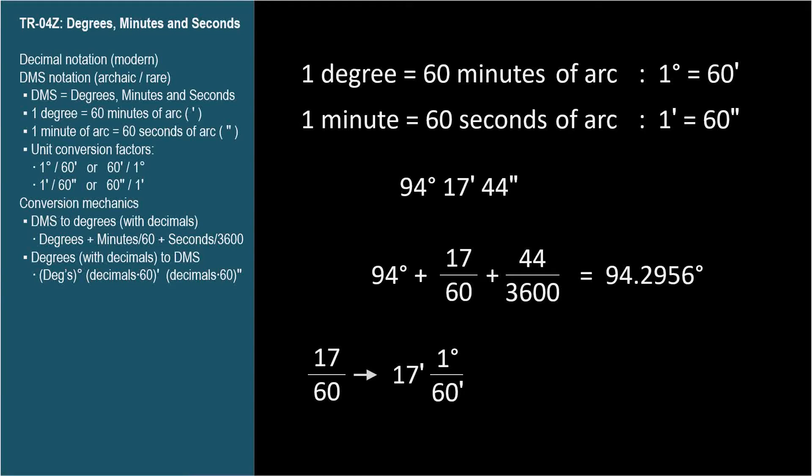When choosing the conversion factor, the denominator, the bottom half of the fraction, should represent the units you want to convert away from. Since we have minutes and want to convert to degrees, we use 1 degree per 60 minutes, since we want to convert away from minutes. So, the minutes cancel out, and the 17 divided by 60 represents degrees, just as we want.